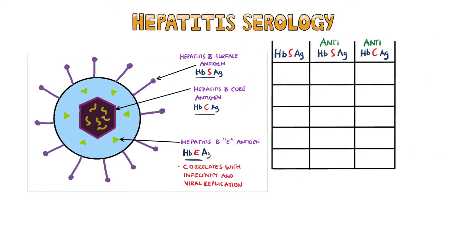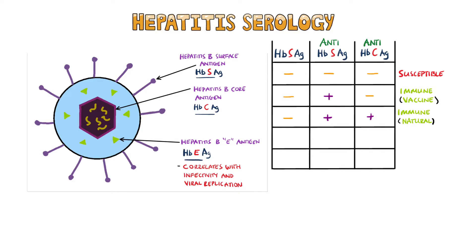Based on these, we have several possible scenarios. A patient who is negative for the hepatitis B surface antigen, the anti-hepatitis B surface antibody, and anti-hepatitis B core antigen is considered susceptible to the virus. Patients with a negative hepatitis B surface antigen, a positive anti-HBS, and a negative anti-hepatitis B core are considered immune due to having had the hepatitis B vaccine. Patients who have both the anti-hepatitis B surface and anti-hepatitis B core antibodies are immune, but naturally immune due to having had the disease and subsequently cleared it.